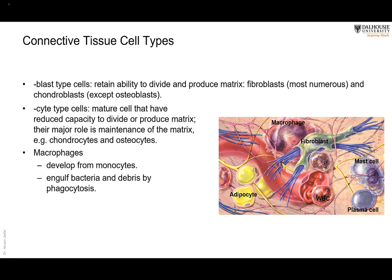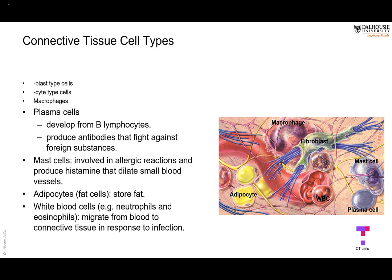These black clumps are macrophages full of carbon particles. Macrophages also engulf bacteria and debris. Plasma cells are derived from lymphocytes present in the blood — they produce antibodies to fight infection. Mast cells are important for allergic reactions. Adipocytes produce fatty material and are part of the adipose tissue.